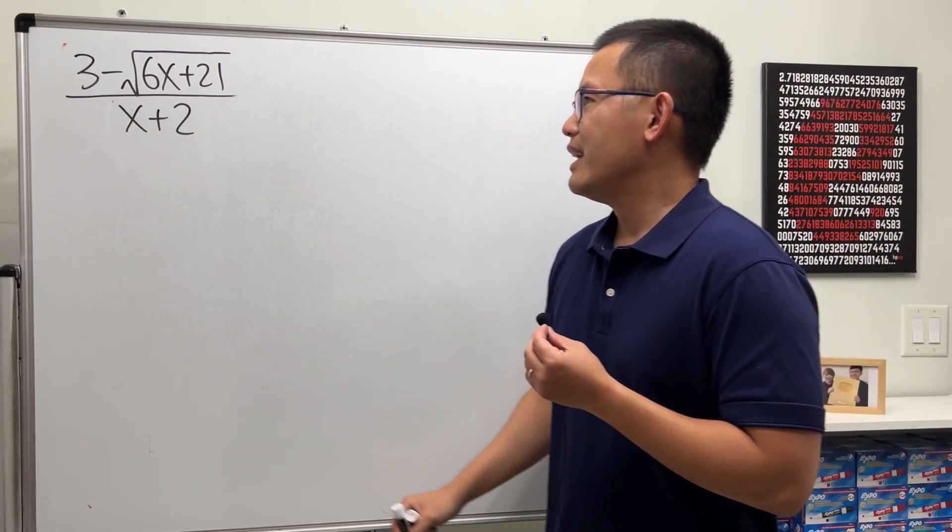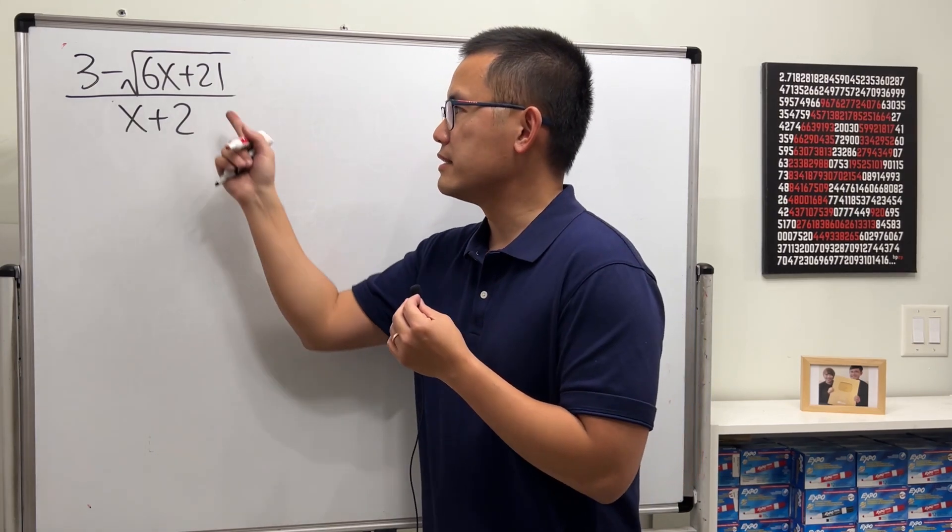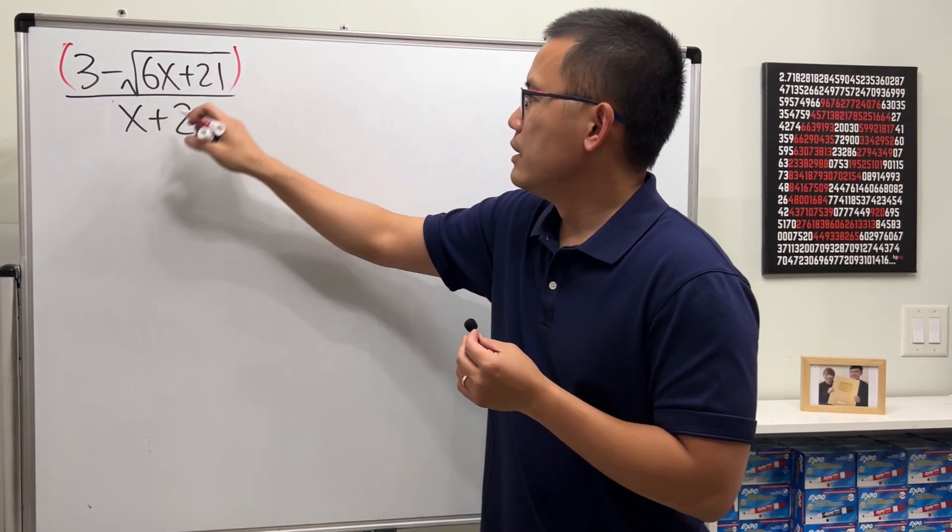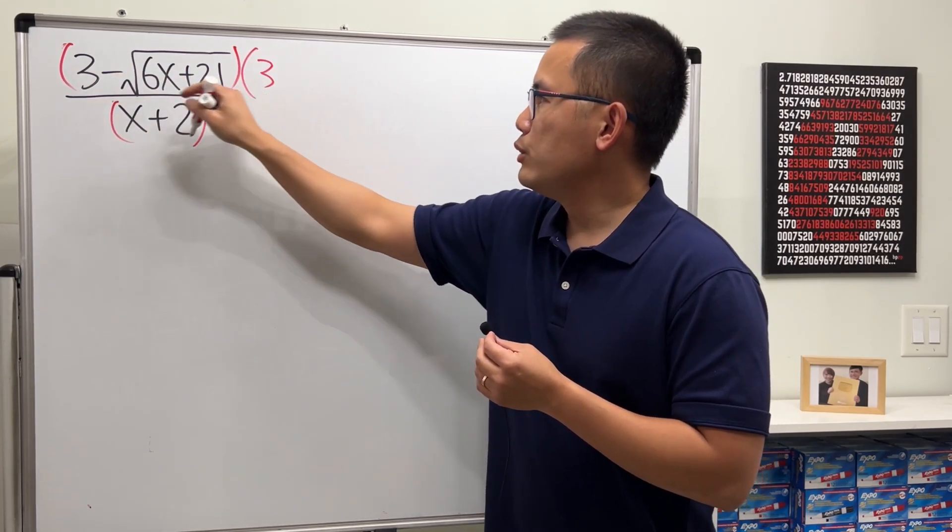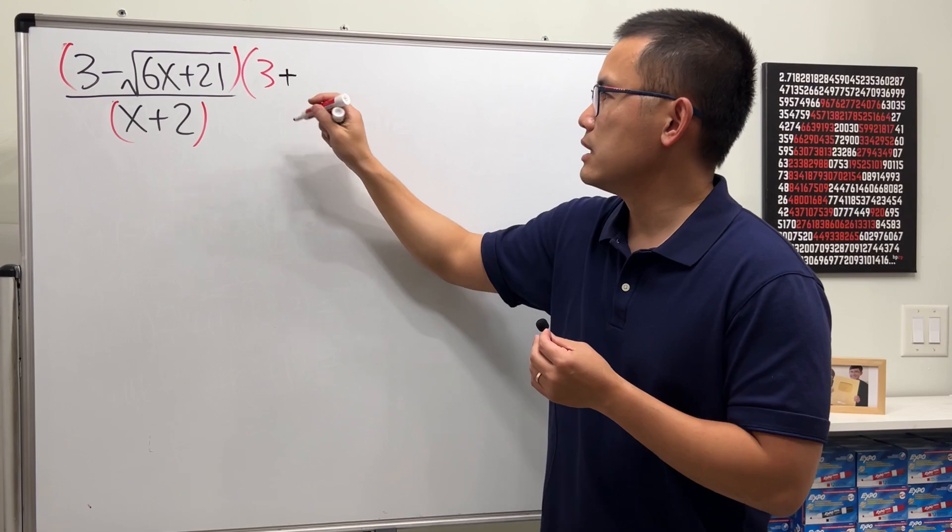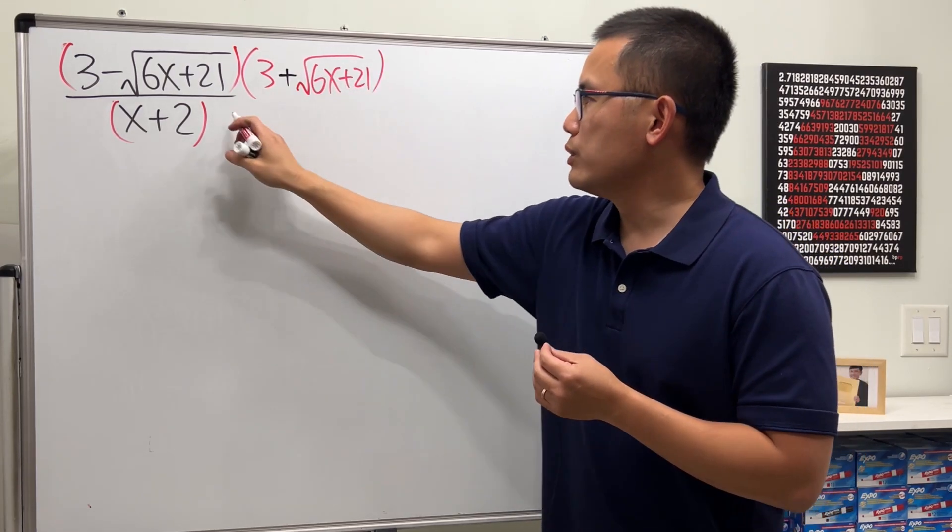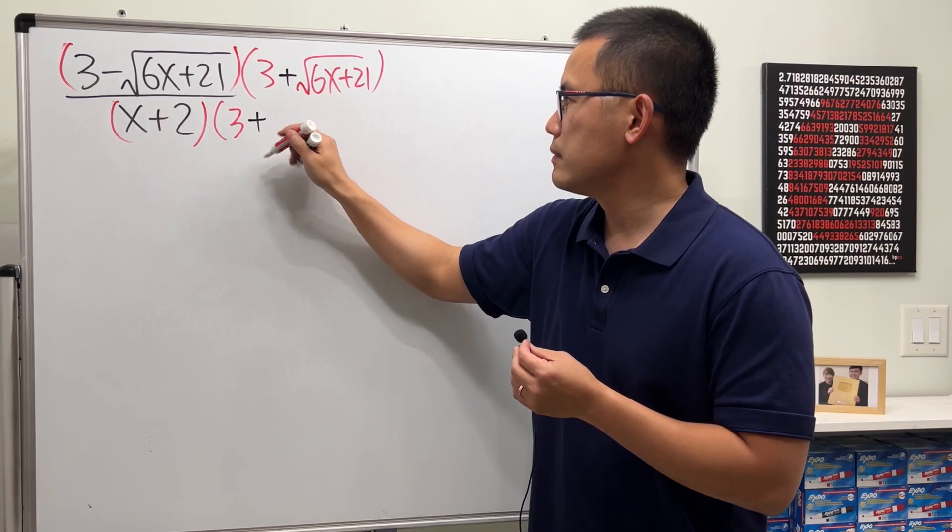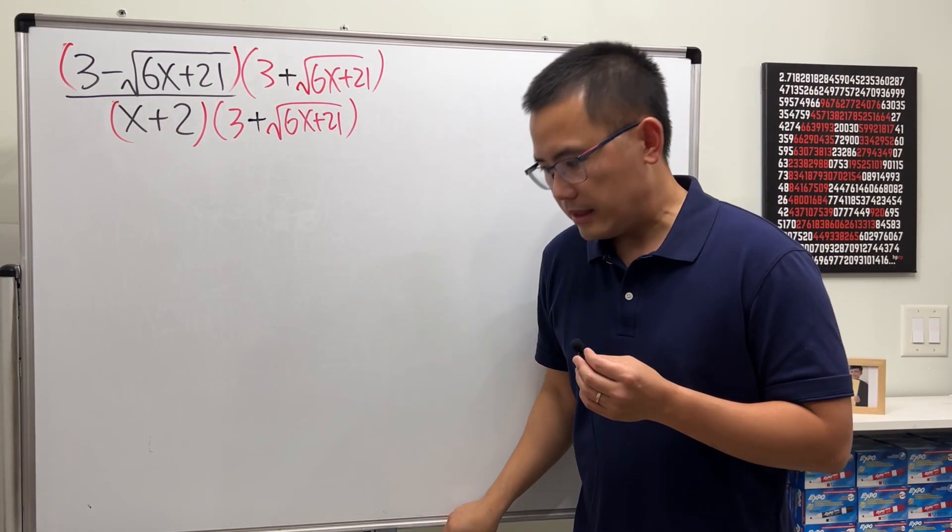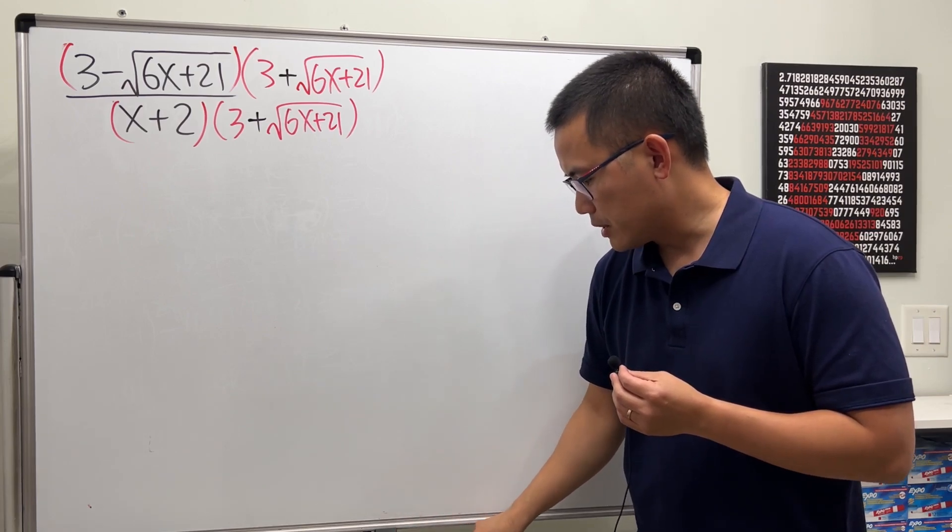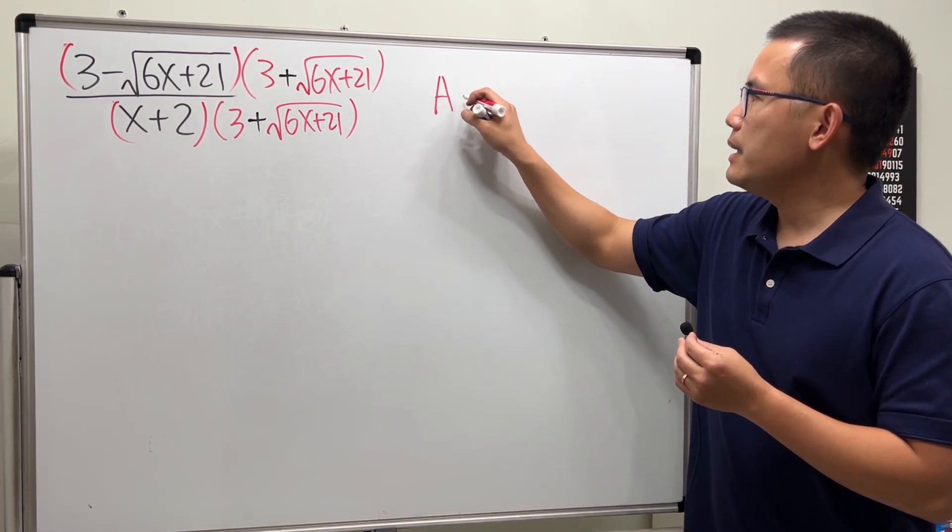First, when we see square root, one strategy is to multiply the top and bottom by its conjugate. So we are going to multiply by 3, and you change the minus to a plus, and then the second part stays the same. We'll do the same thing on the bottom. The reason behind the conjugate is because of the following: when we have a minus b...